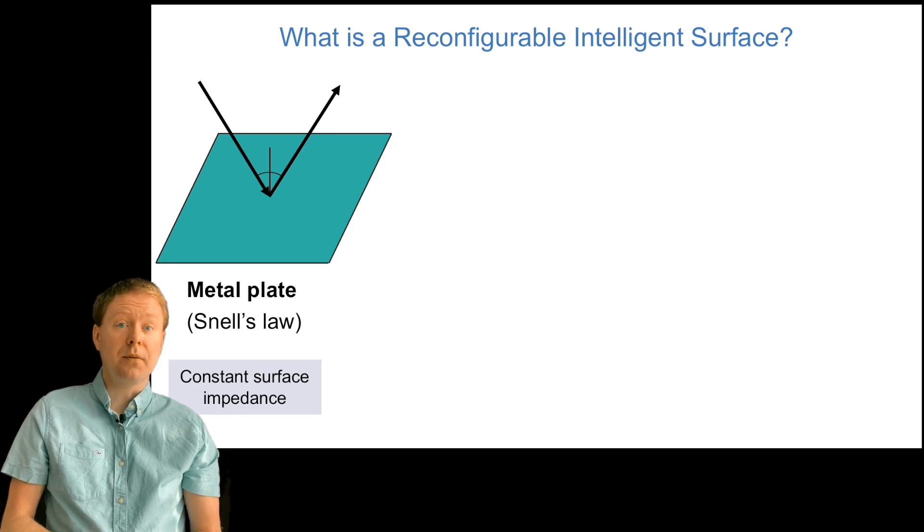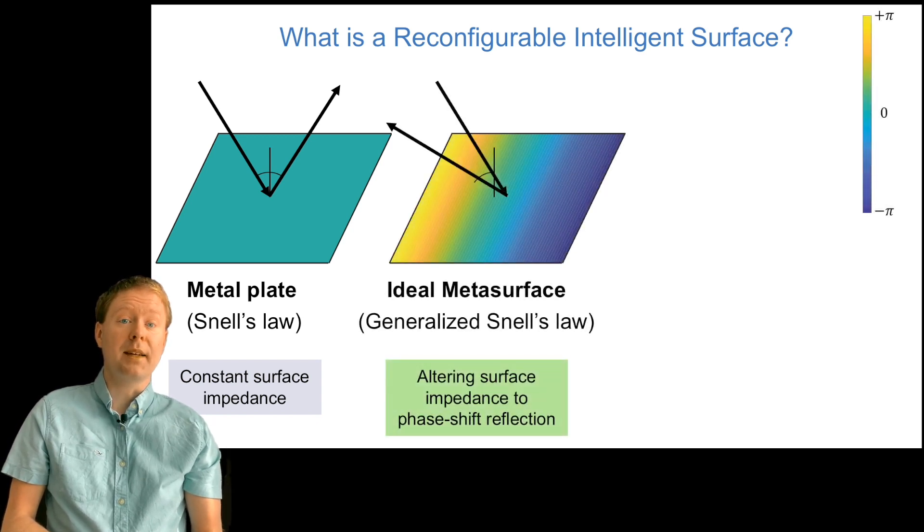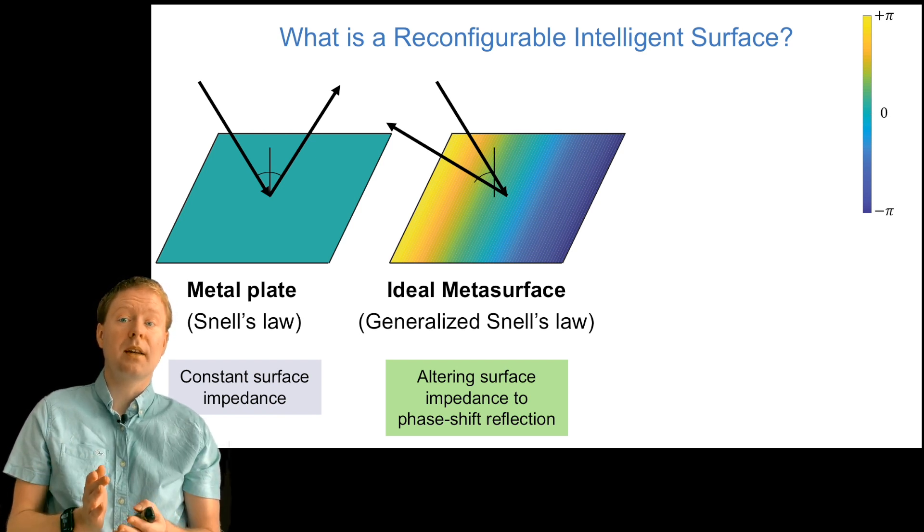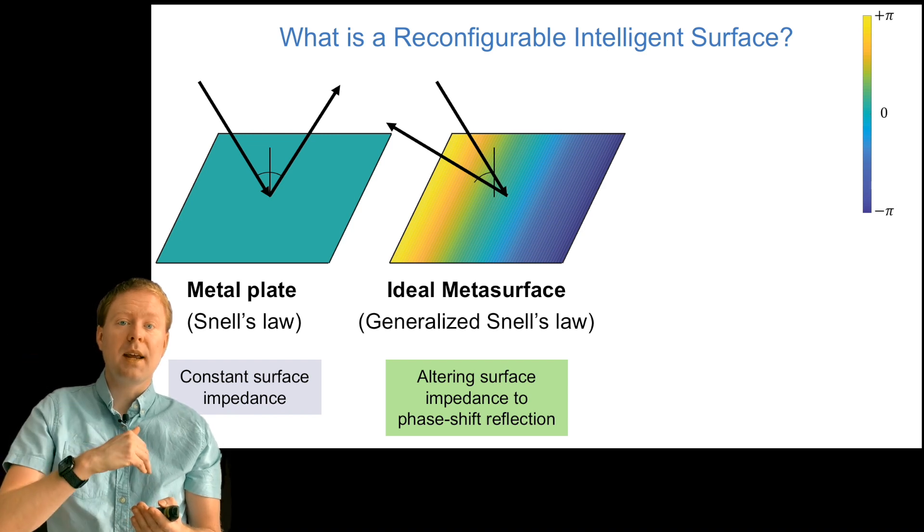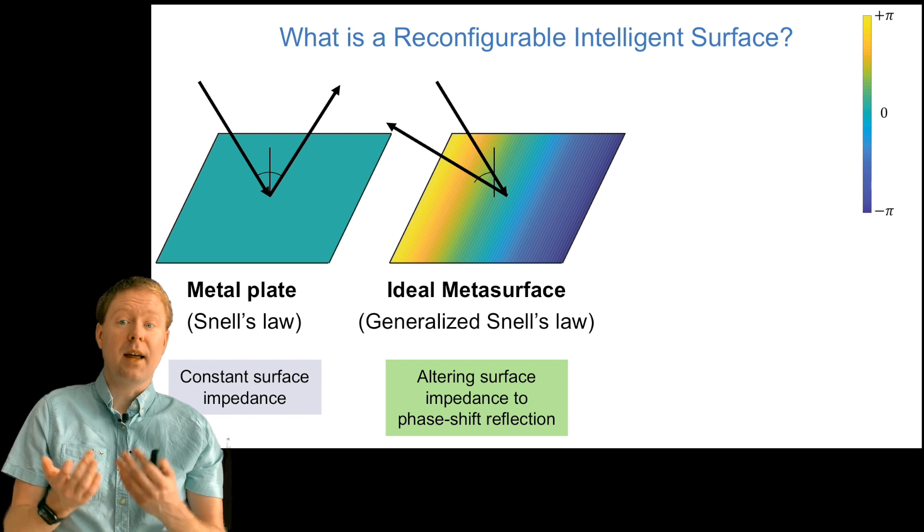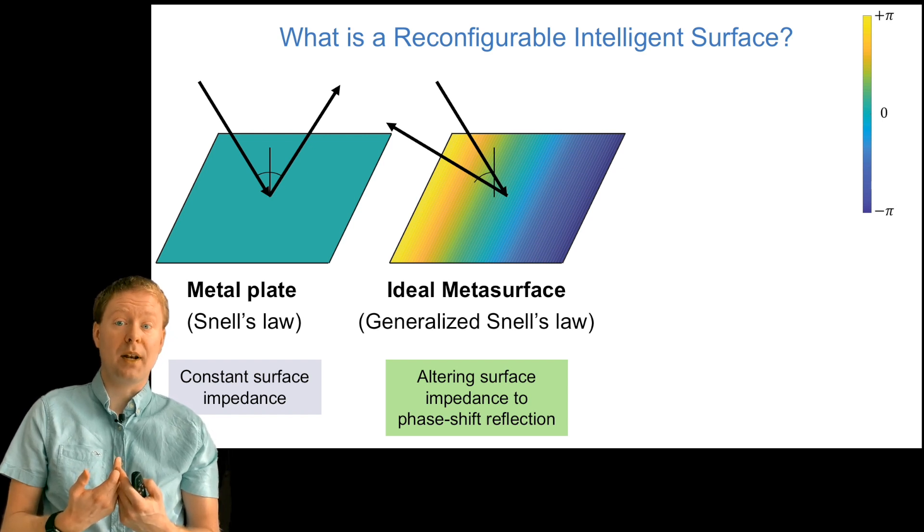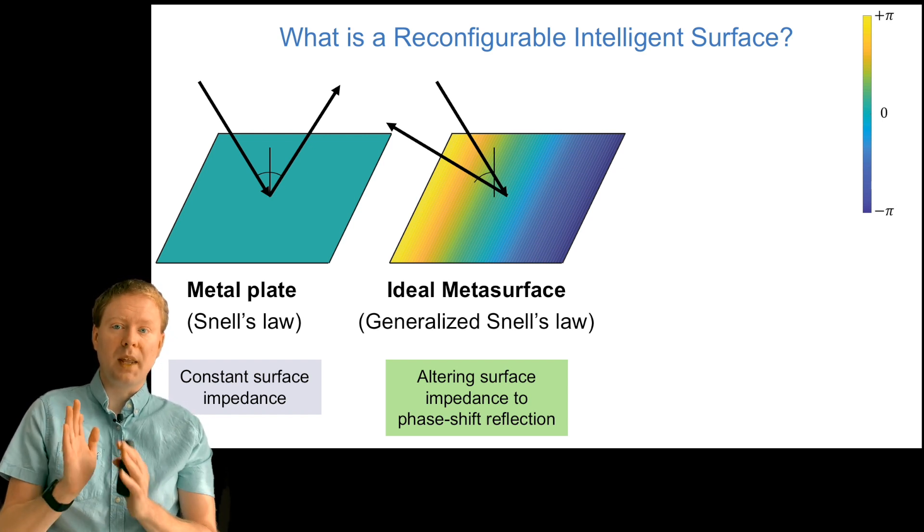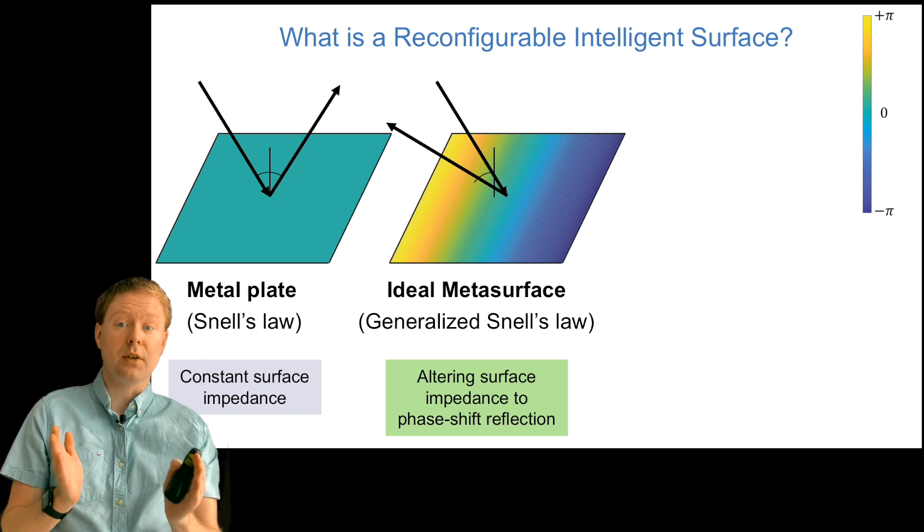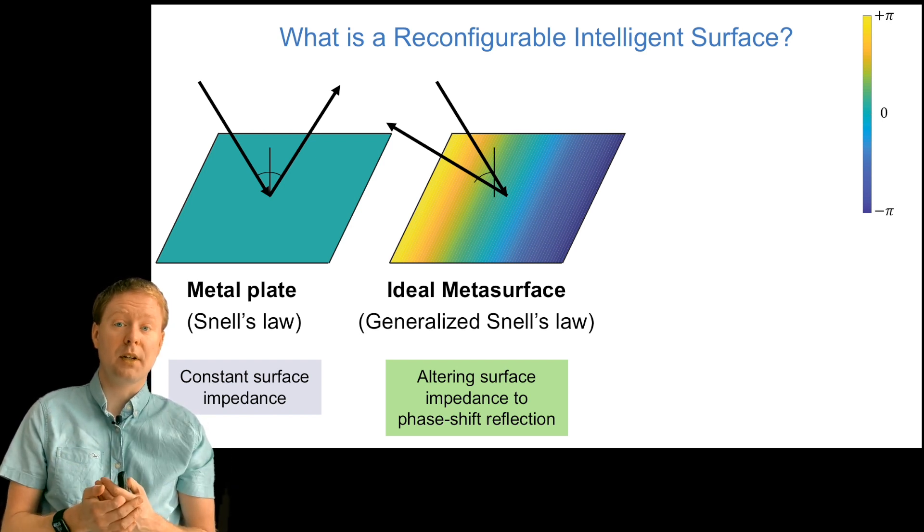A reconfigurable intelligent surface is built on a meta-surface concept, where we can alter the impedance along the surface. In that way we can determine when a signal comes in, in which direction will it bounce off. That follows what's called the generalized Snell's law. These different colors here show the different phase shifts that the signals are subject to at different positions on the surface, and you see that it changes in such a way that the signal bounces off in a particular direction.